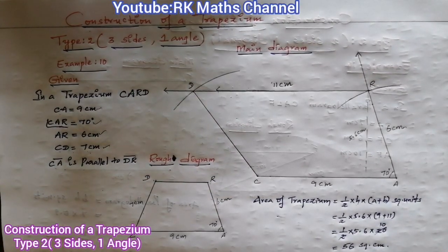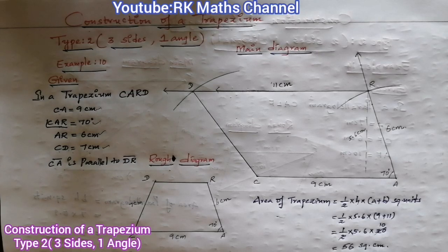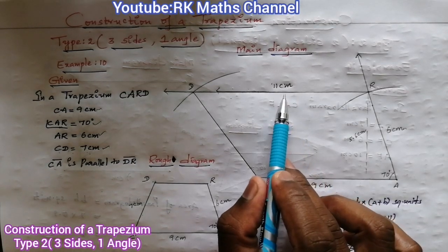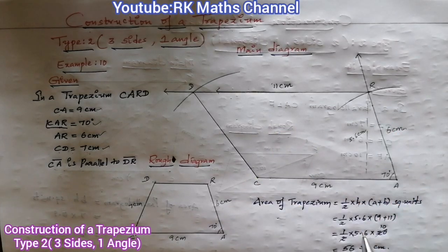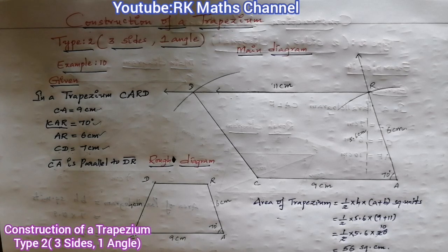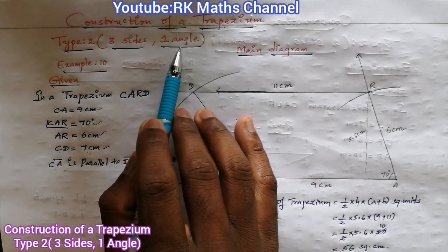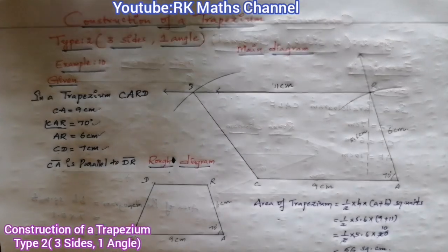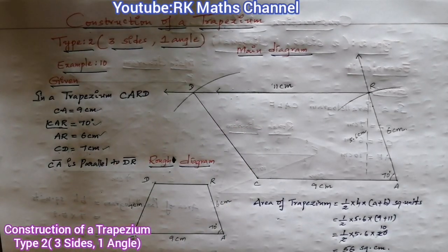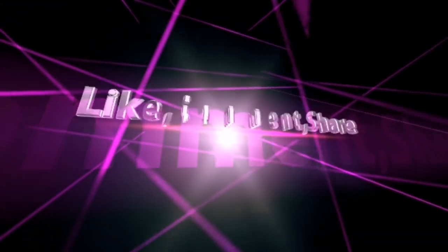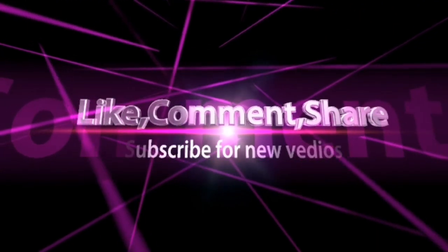So the area of the trapezium CARD is 56 square centimeters. Here you can see the parallel lines and the height — the height is the important measurement. Next we will see type two: three sides and one angle concept. Thank you, subscribe for new videos.